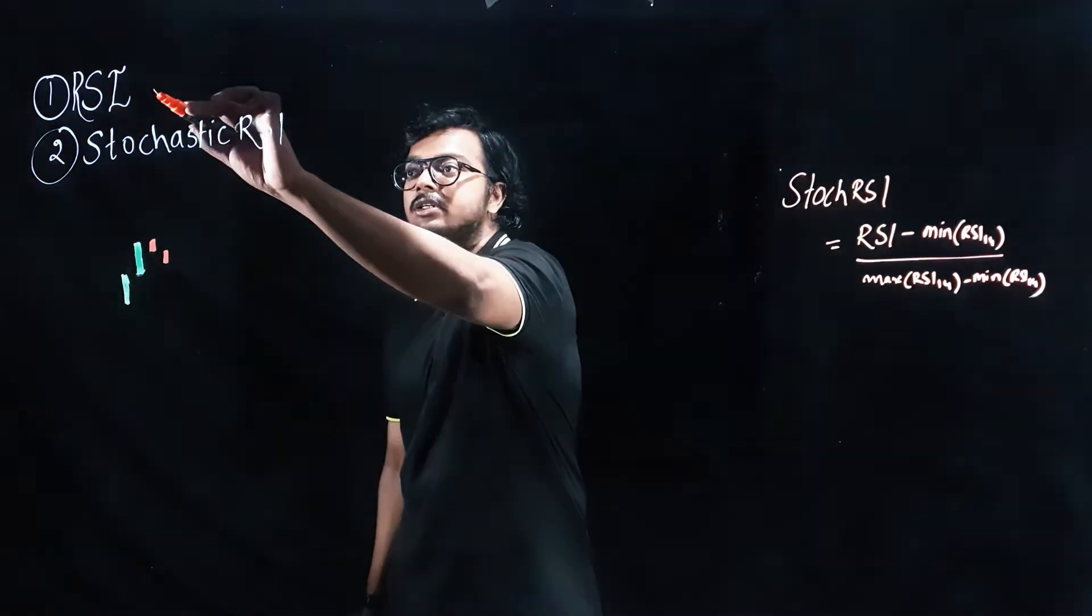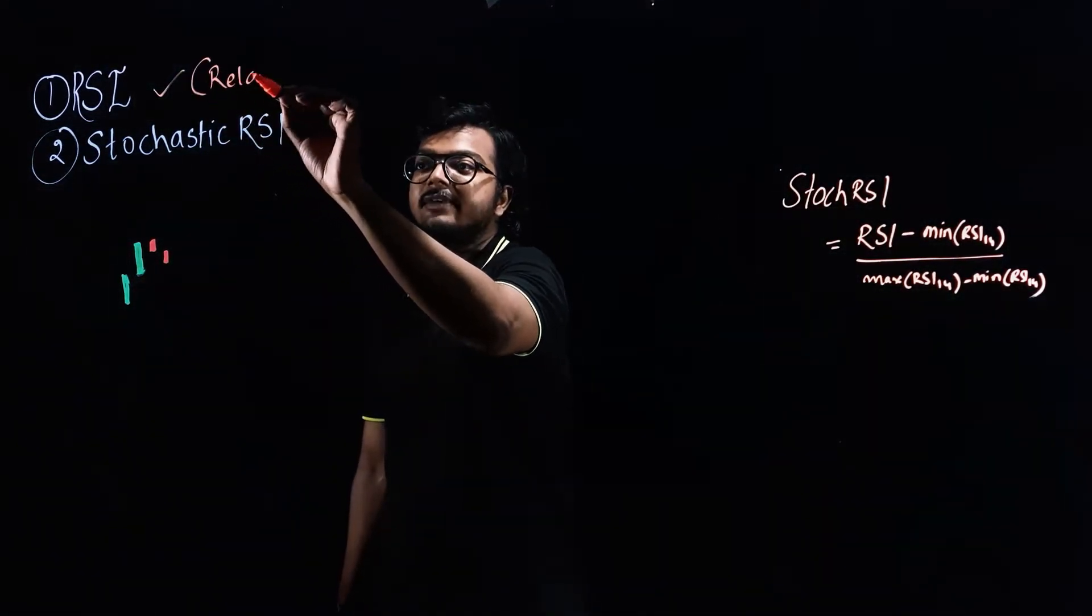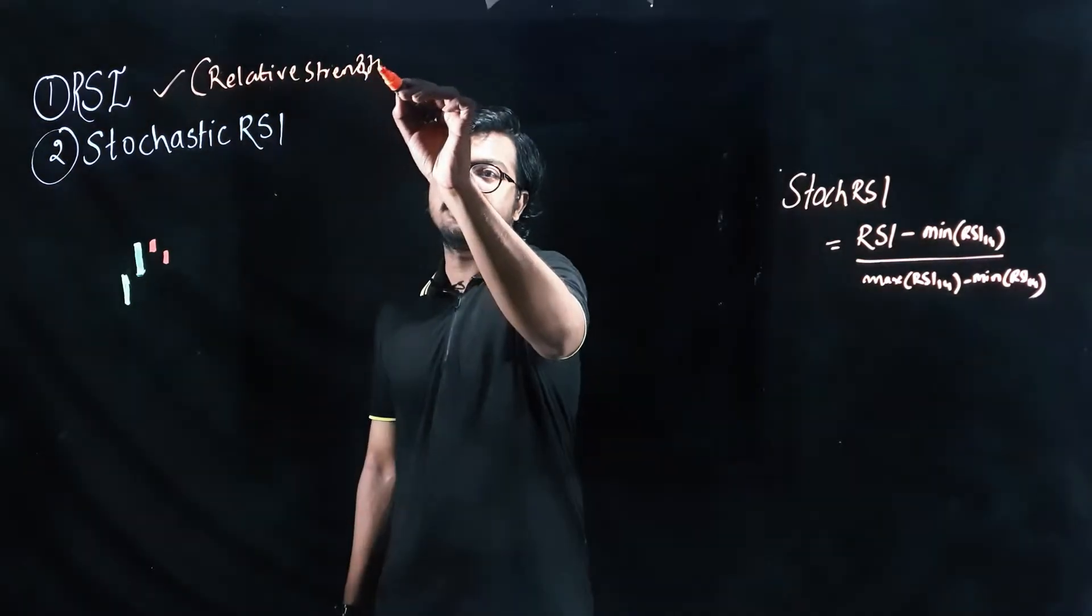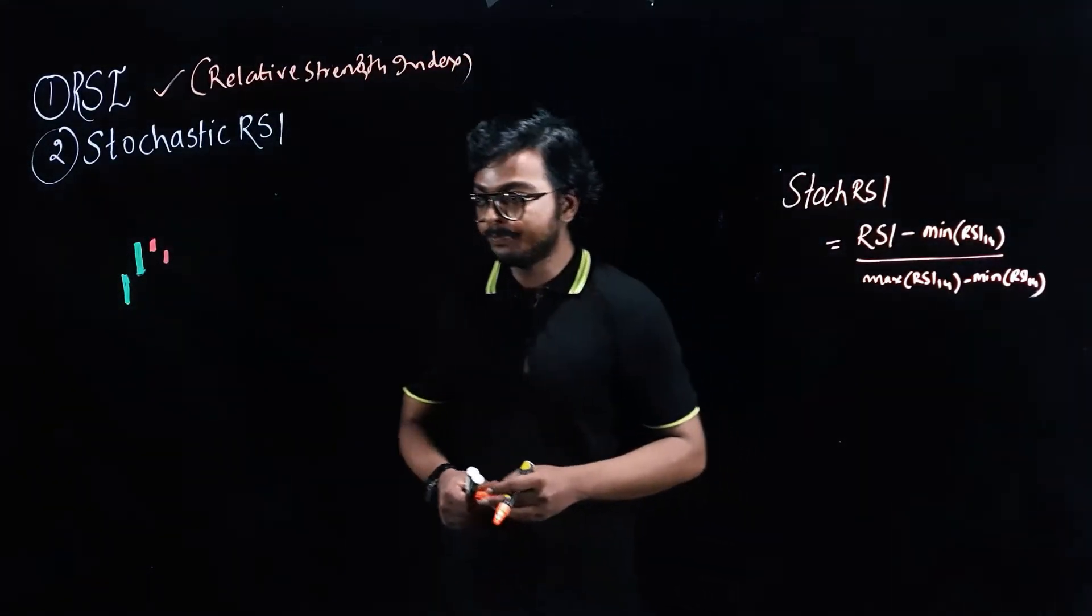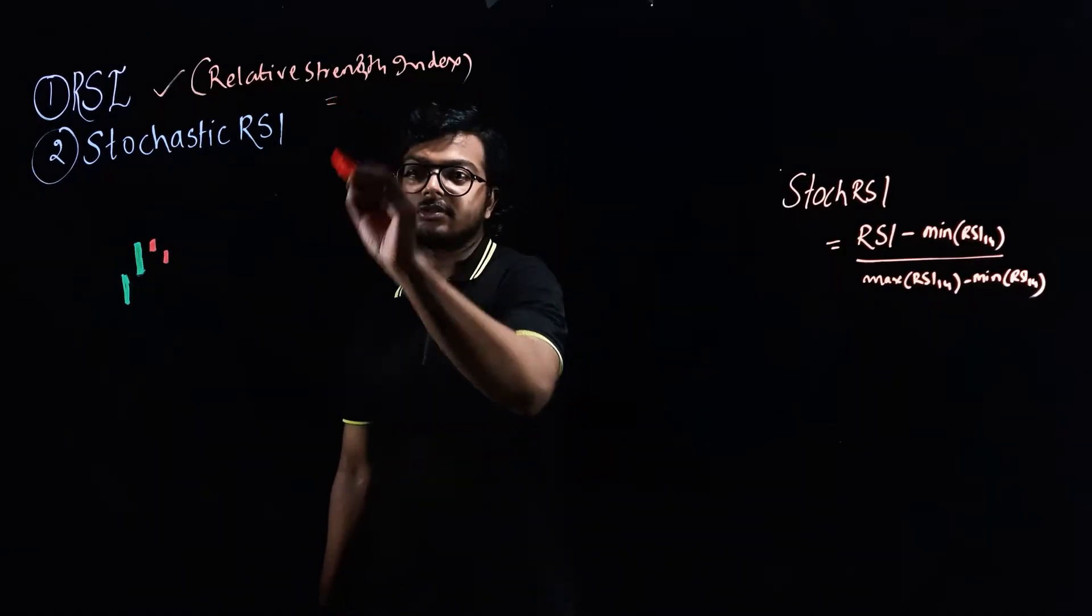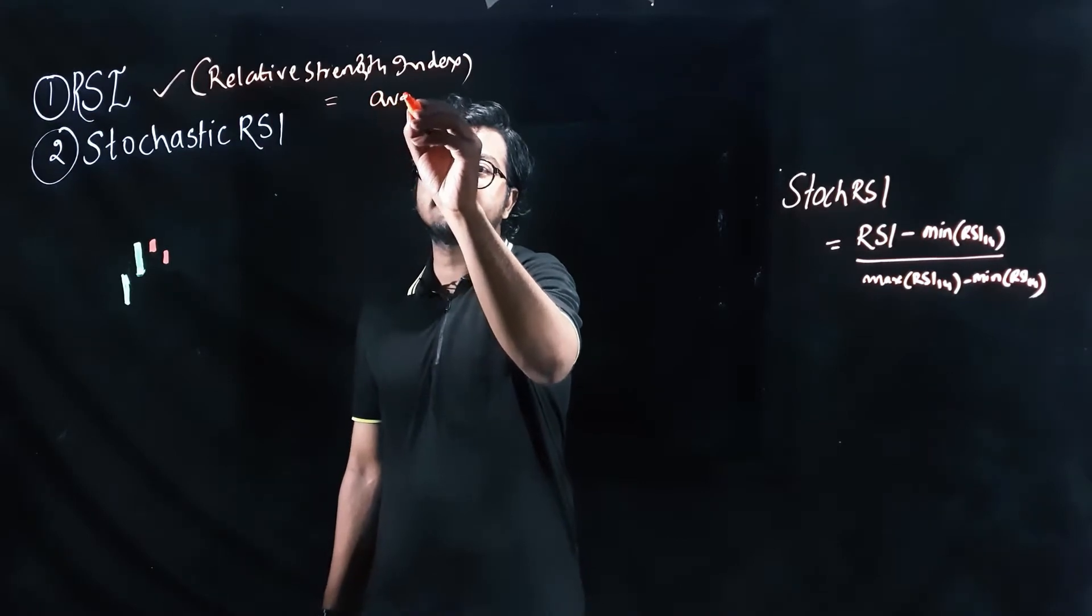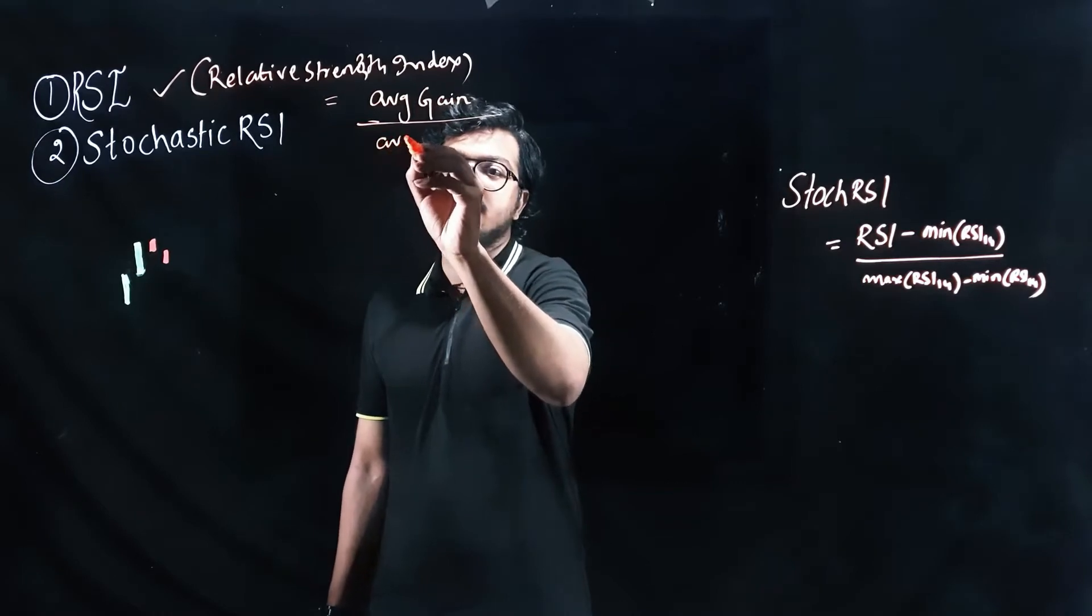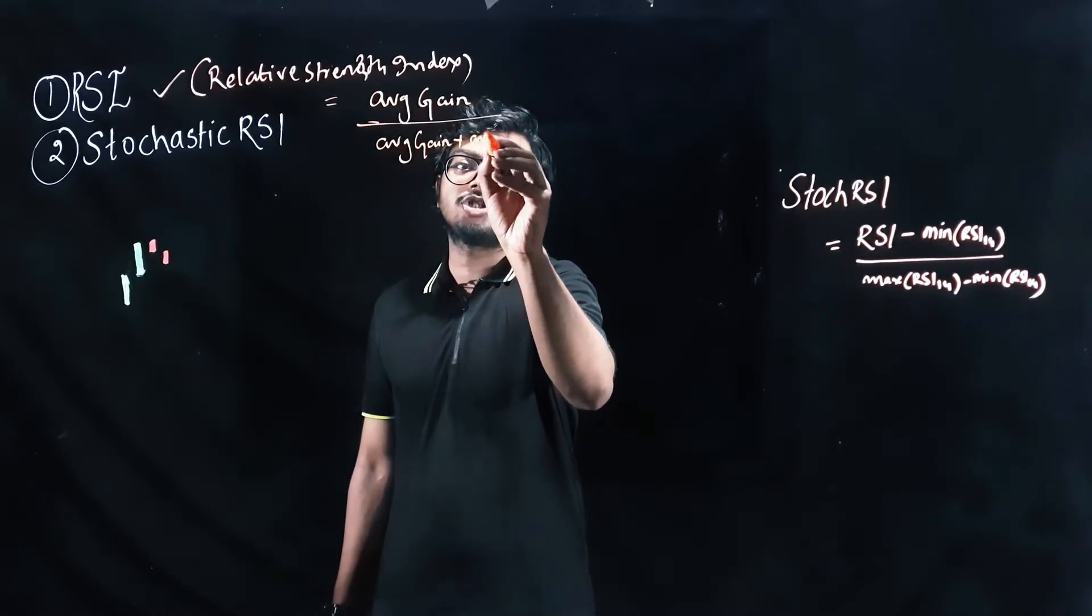So first we will discuss RSI. The full form of RSI is Relative Strength Index. Let me give you an example. First of all, let's see the formula. The formula is simple: Average Gain divided by Average Gain plus Average Loss.